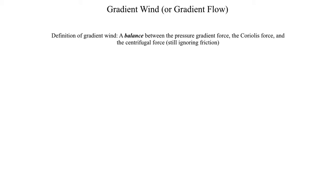Unlike the geostrophic balance, where we disregard curved flow and only consider straight flow as a balance between the pressure gradient force and the Coriolis force, with the gradient wind balance we start worrying about curved flow patterns, which means we also have to account for the centrifugal force.